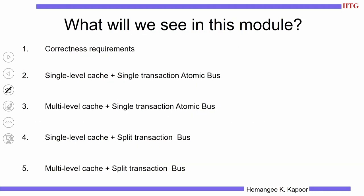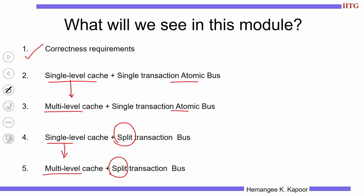What are we going to see in this module? First, we will list and understand the importance of correctness requirements in this lecture. Then in the next lecture, we will look at how an atomic bus — a system which works on a bus that takes only one transaction at a time, finishes that transaction, then takes the other — with single-level caches can implement a snoop-based design. We will then move to a multi-level cache with an atomic bus, then a single-level cache with a split transaction bus allowing multiple transactions in parallel, and finally a split transaction bus with a multi-level cache.